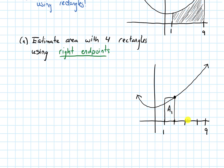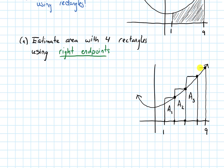So I go to the next subinterval; its right endpoint is over here. I draw up until I hit the curve, then a horizontal line for the top, and finish the rectangle. I'll call these areas A1, A2, A3, and A4, repeating this process for each of the four subintervals.